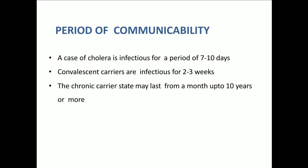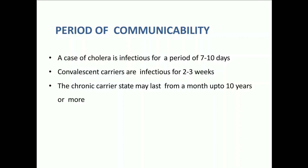Coming to the period of communicability: a case of cholera is infectious for a period of 7 to 10 days. Convalescent carriers are infectious for 2 to 3 weeks. The chronic carrier state may last from a month up to 10 years or sometimes more.